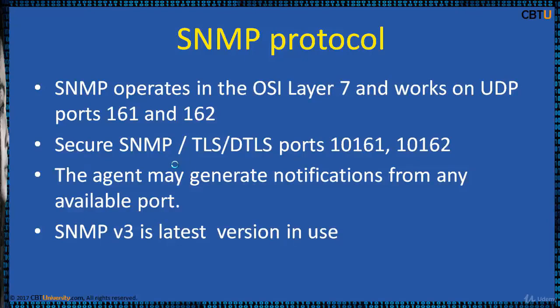SNMP operates in the application layer, i.e. layer 7 of the OSI model. The SNMP agent receives requests on UDP port 161. The manager sends requests from any available source port to port 161 in the agent. The agent response will be sent back to the source port or the manager. The manager receives notifications, i.e. traps or informed requests, on port 162. The agent generates notifications from any available port.